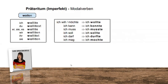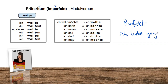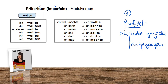We have a new topic today: Präteritum, or imperfect — you can use either term, they mean the same thing. This is the other way to talk about the past. We already learned the perfect tense: 'ich habe gegessen', 'ich bin gegangen', and so on. We learn perfect first because you only need 'haben' or 'sein' plus one Partizip II form — 'ich habe gegessen', 'du hast gegessen', 'wir haben gegessen' — it's always the same, so it's easier.